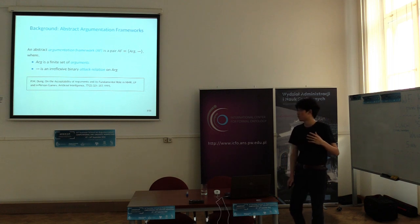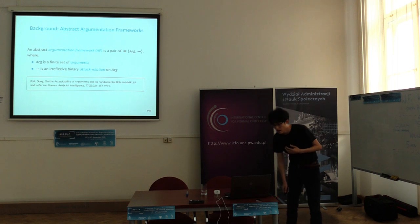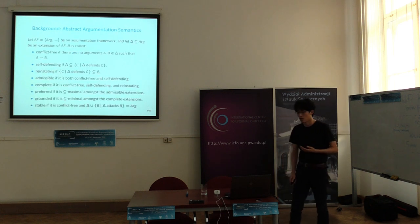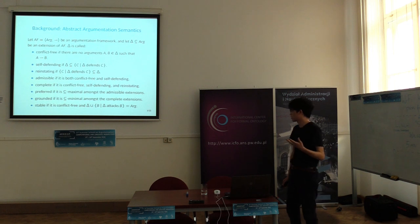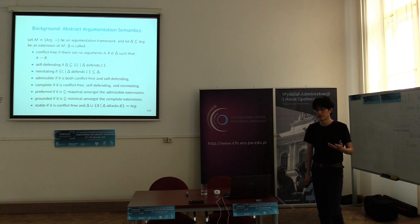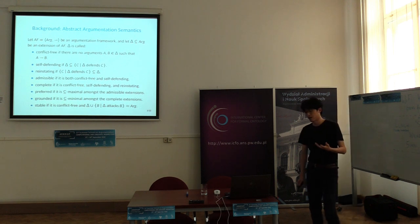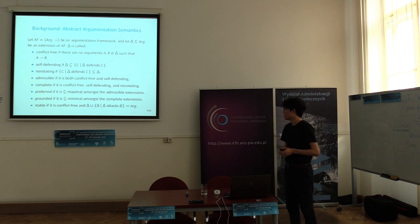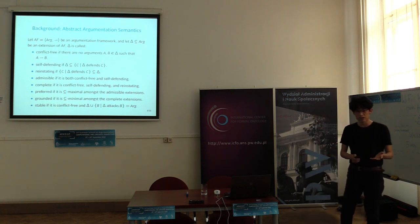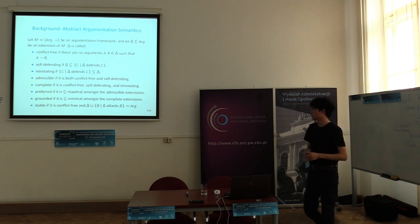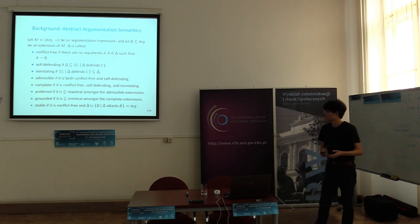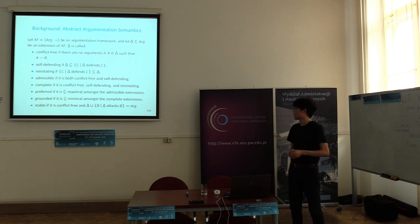An abstract argumentation framework consists of two parts. The first is a finite set of arguments. The second is a set of binary attack relations defined on those arguments. There are several semantics: some are defined by Dung in 1995, and some are defined later, such as the grounded extension and the stable extension. A self-defending set is a subset of the set of arguments which can defend itself.